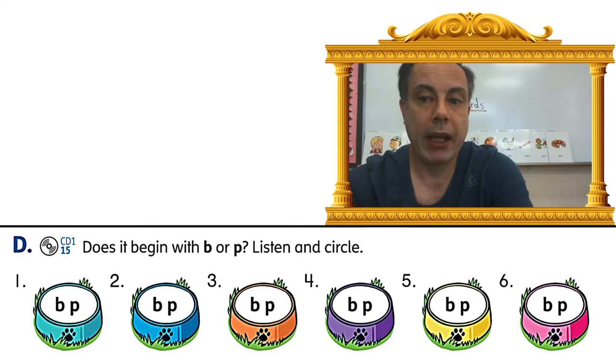Number one: bike, bike. Number two: pin, pin. Number three: pot, pot. Number four: bell, bell. Number five: put, put. And number six: pin, pin, pin.